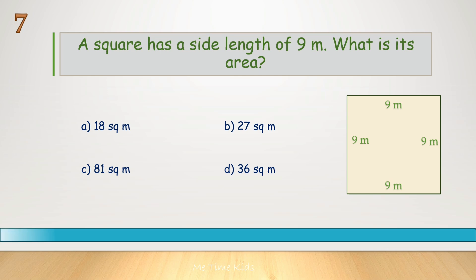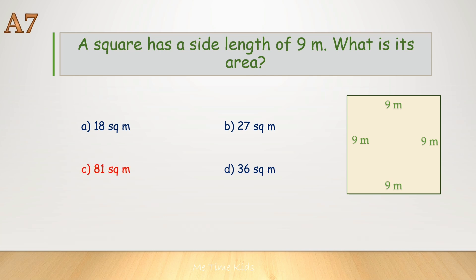A square has a side length of 9 meters. What is its area? Correct answer is C, 81 square meters.